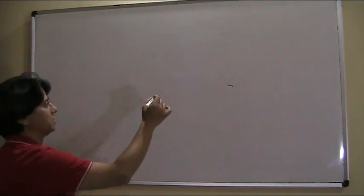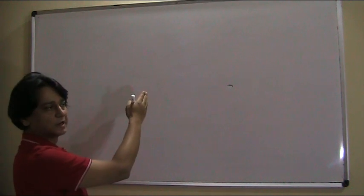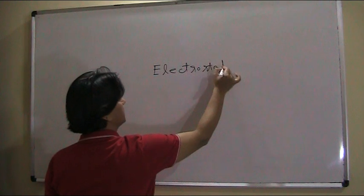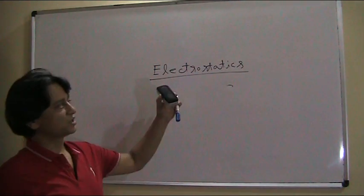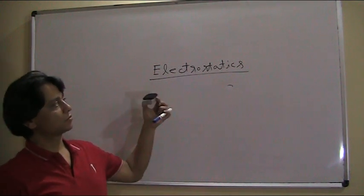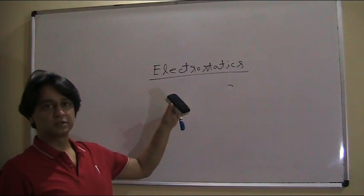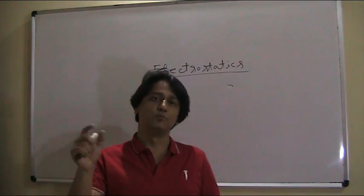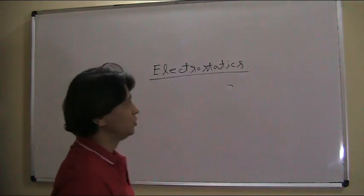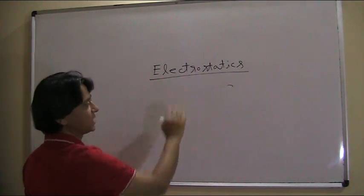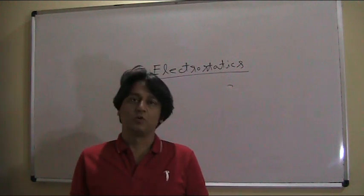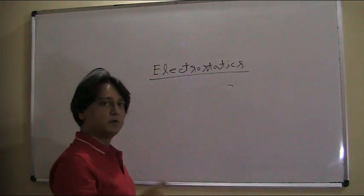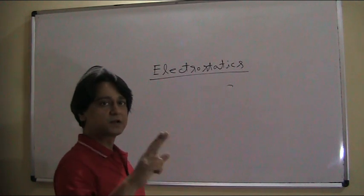Hello everybody. This is electrostatics — the first chapter of Class 12 Physics. The study of charges at rest is called electrostatics. When a charge is at rest, it only produces an electric field, but when it moves, it produces both an electric field as well as a magnetic field.